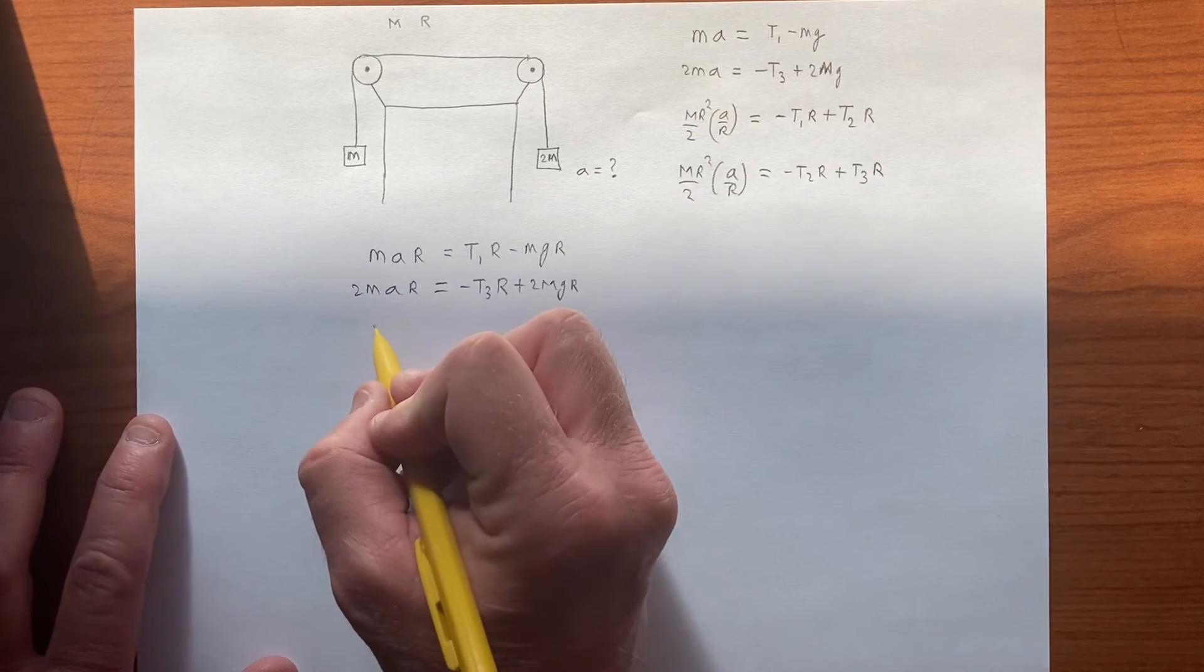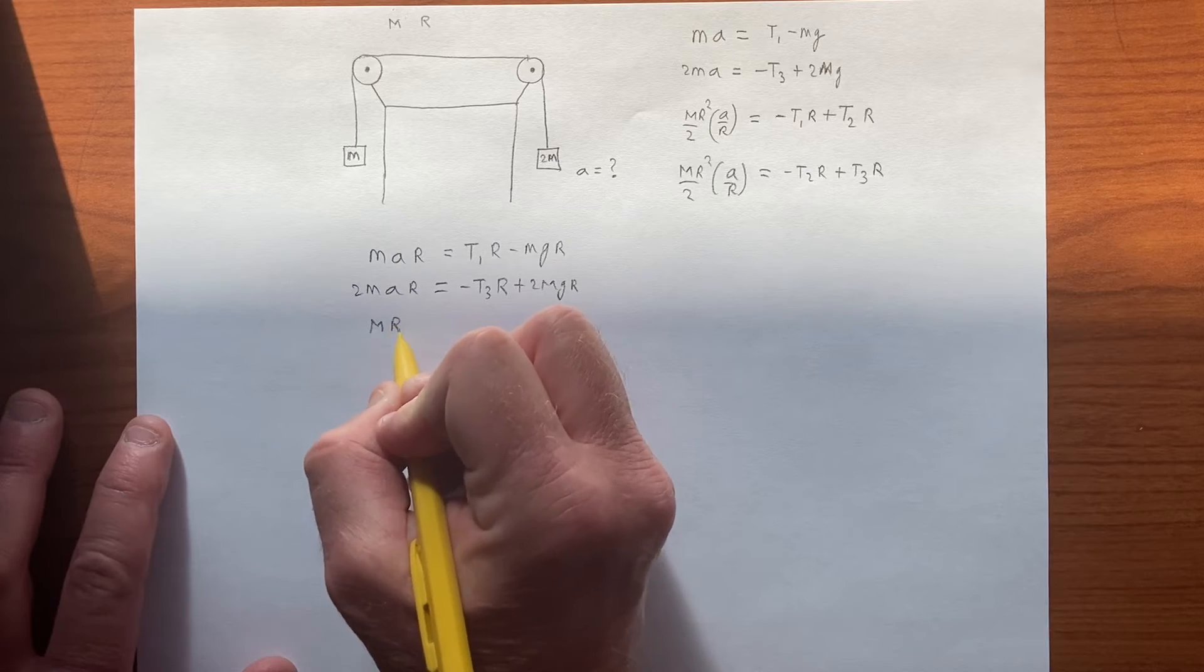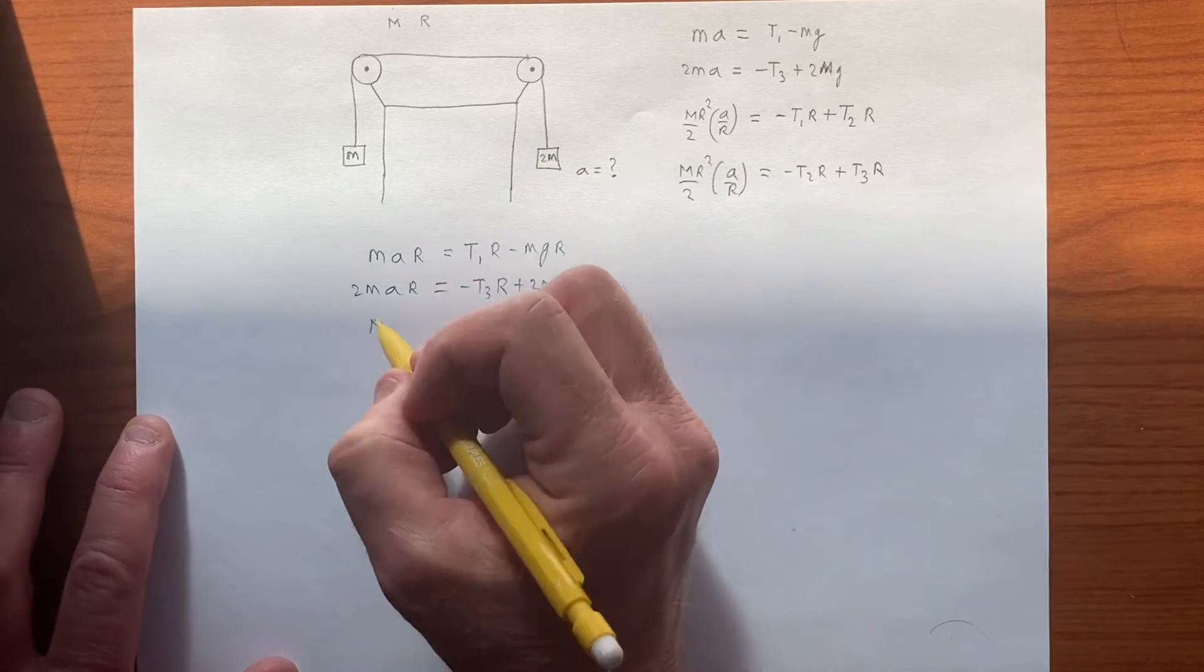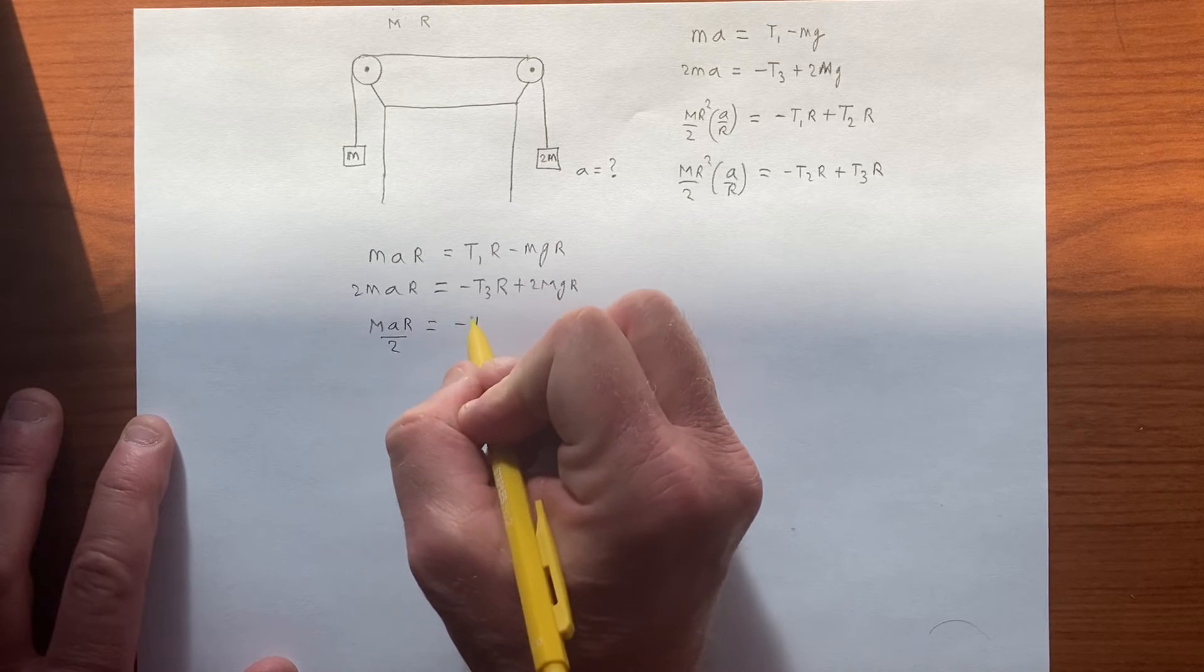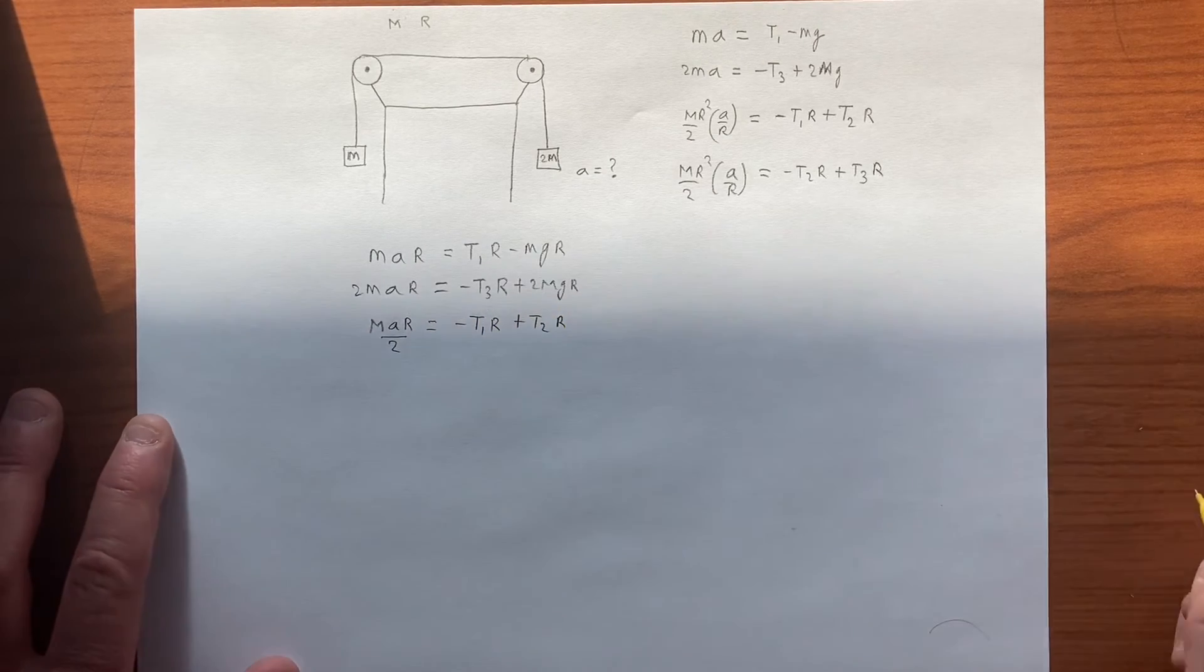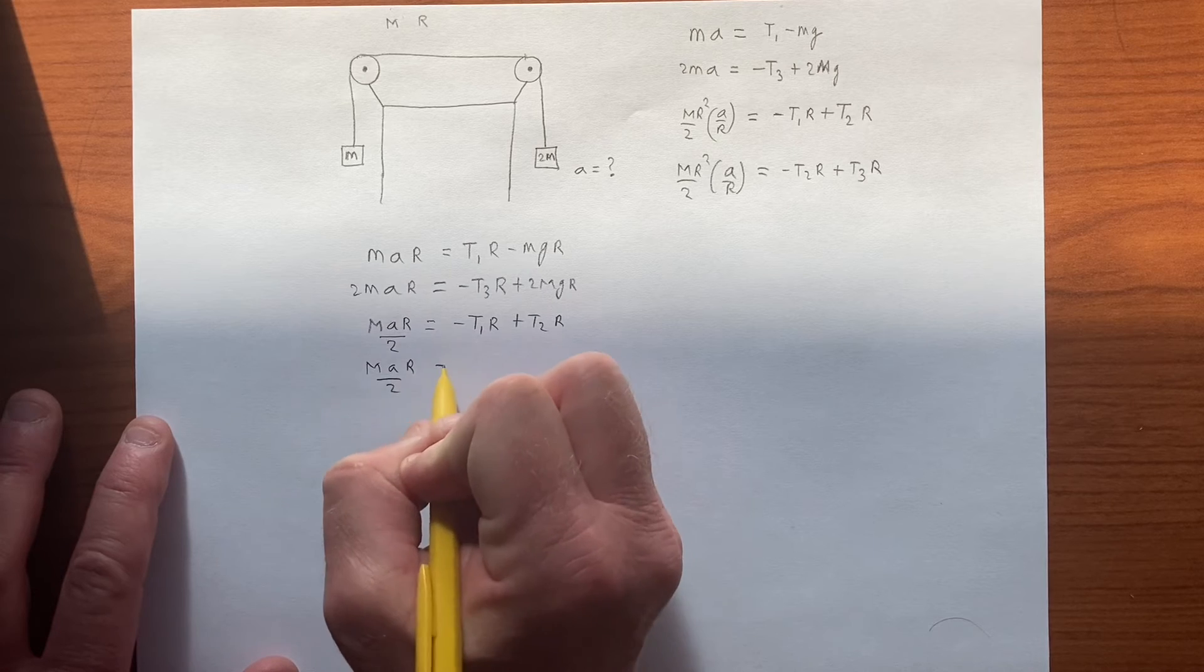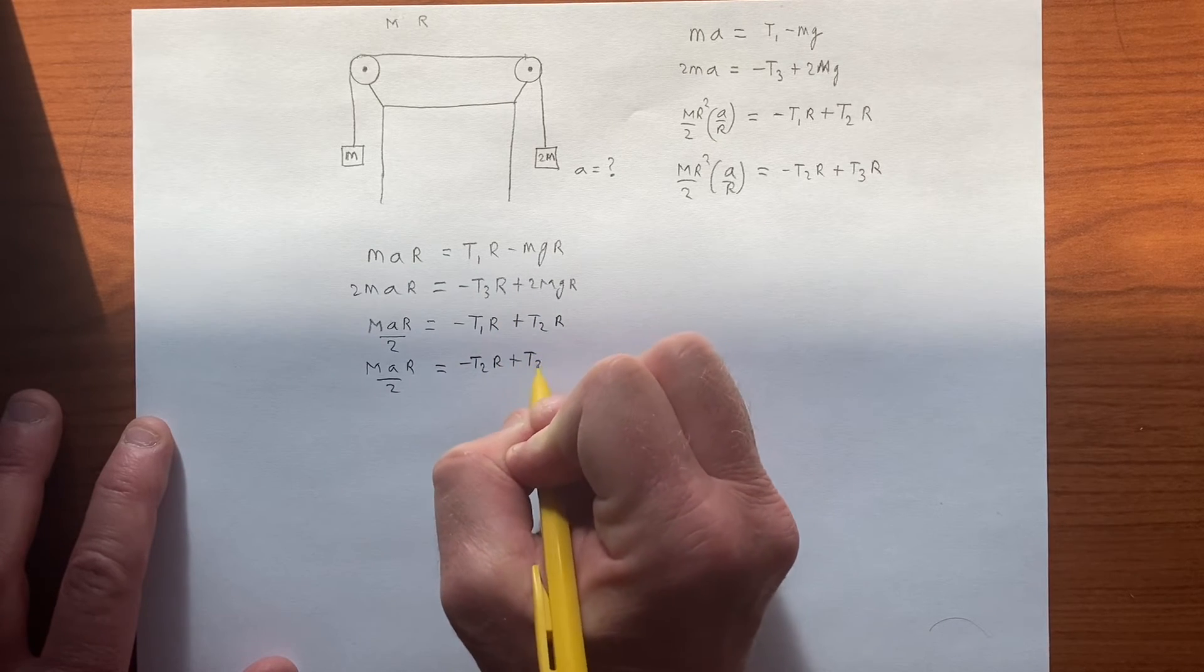and then here we have, we'll just simplify, we have m r times a, let's write the a first, one factor of r cancels, so m a r over 2 is equal to minus t1r plus t2r, and the last one has m a r over 2 equals minus t2r plus t3r,